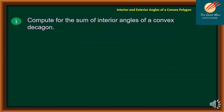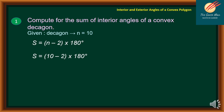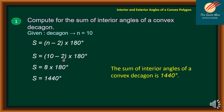Let's apply our knowledge. Compute for the sum of interior angles of a convex decagon. A decagon has 10 sides, so we use S equals (N minus 2) times 180. Substituting N equals 10: (10 minus 2) times 180 equals 8 times 180. Therefore, the sum of the interior angles of a convex decagon is 1,440 degrees.